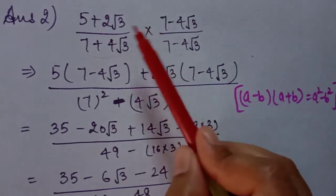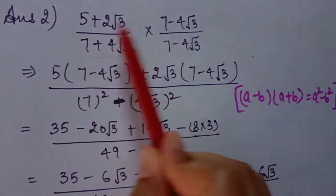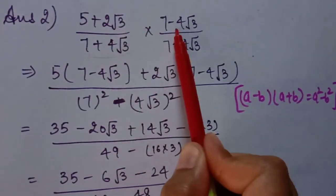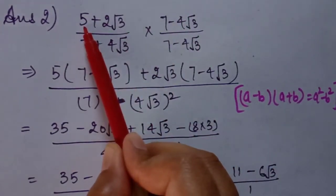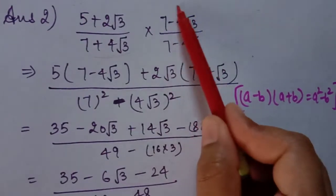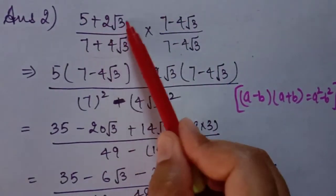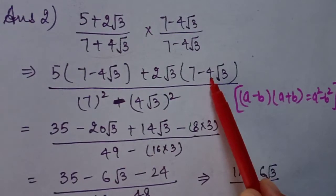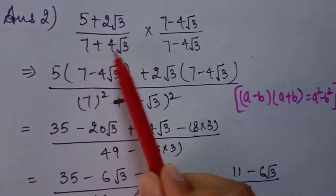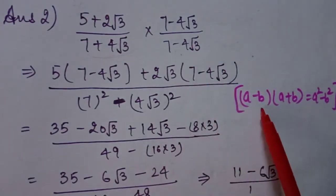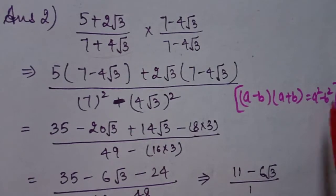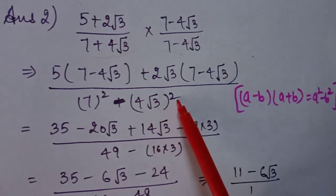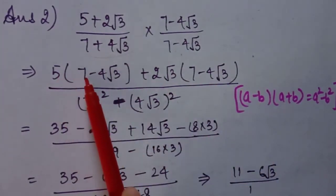When multiplying two expressions, take each term from the first expression and multiply with the full second expression. In the denominator, it is of the form (a + b)(a − b) which equals a squared minus b squared. So the denominator becomes 7 squared minus (4 root 3) squared.